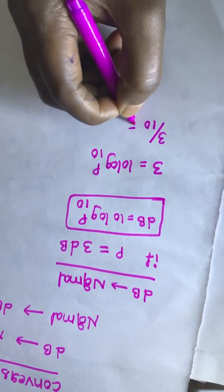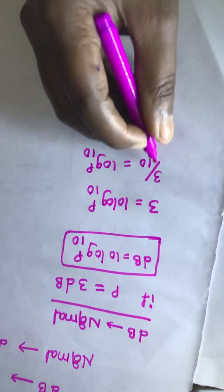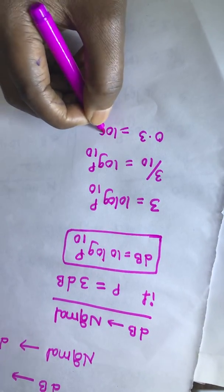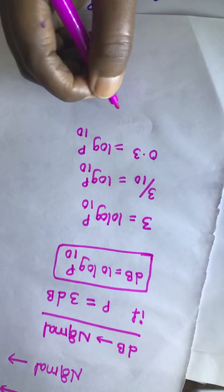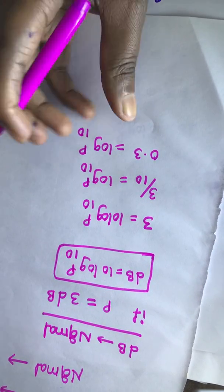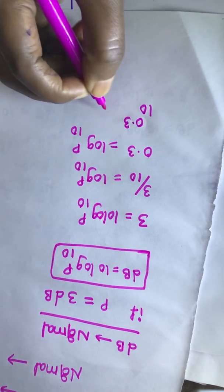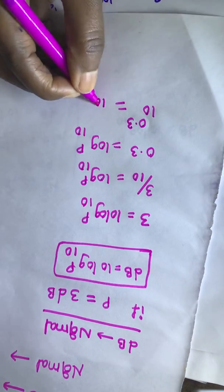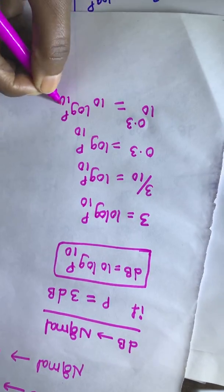This is equal to 0.3 log P base 10 and we will take power in terms of 10 power on both side. That is 10 power 0.3 log P base 10.